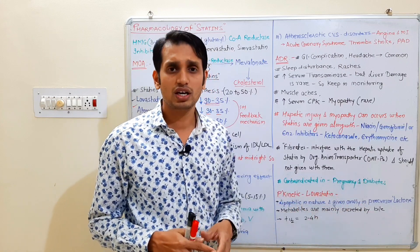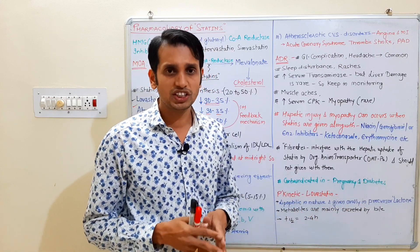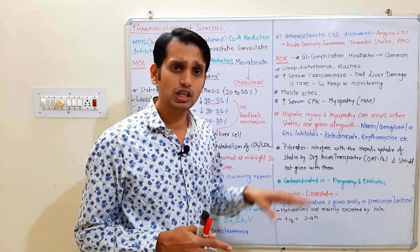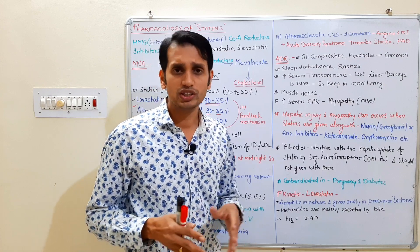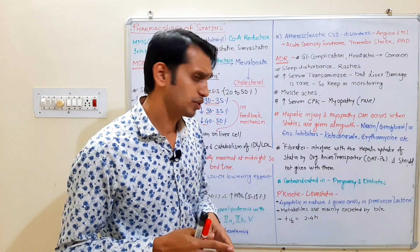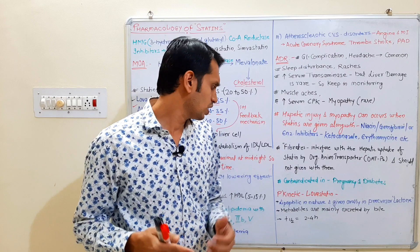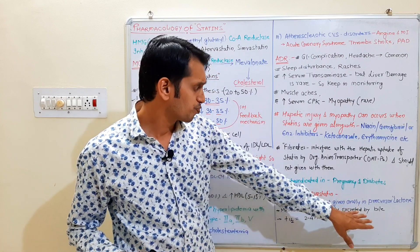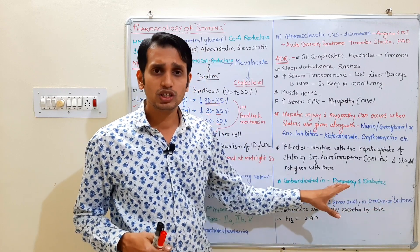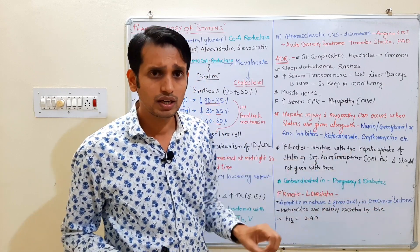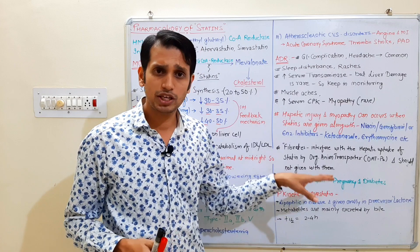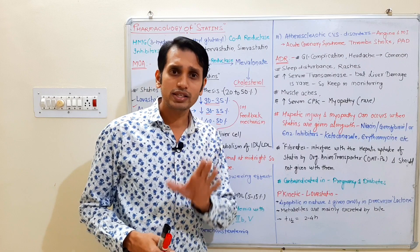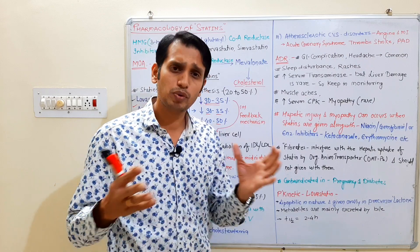Regarding the pharmacokinetics of lovastatin, the prototype drug of this class: lovastatin is lipophilic in nature and is given orally in a precursor lactone (pro-drug) form. It is metabolized by the liver and the metabolites are excreted through bile.